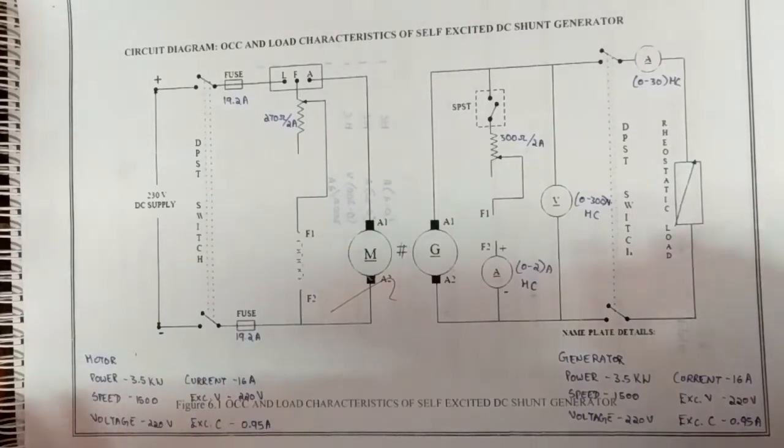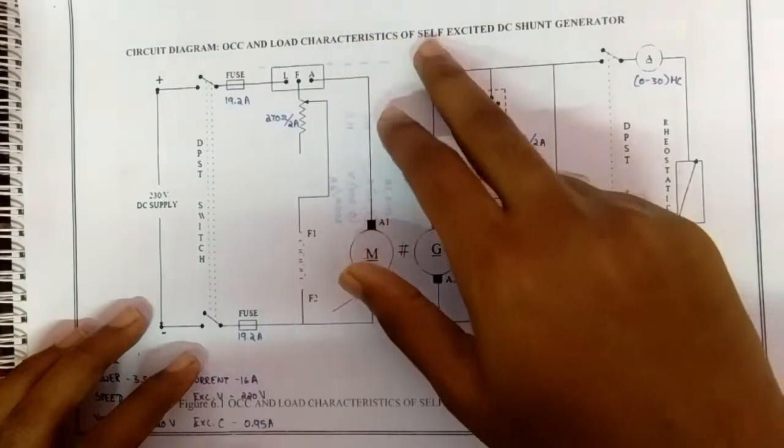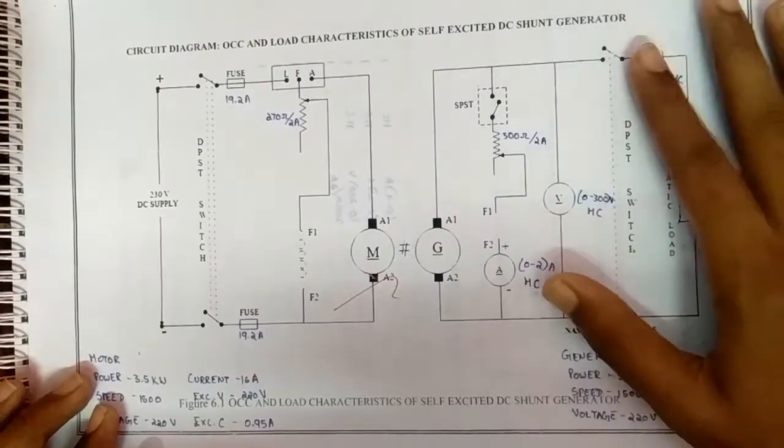Hi guys, in this experiment we're going to see the OCC and load characteristics of a self-excited DC shunt generator. This is the circuit diagram for this experiment.